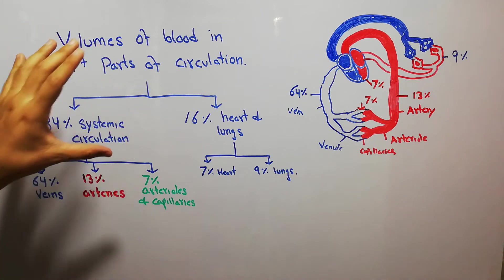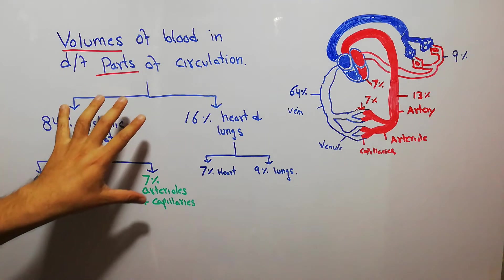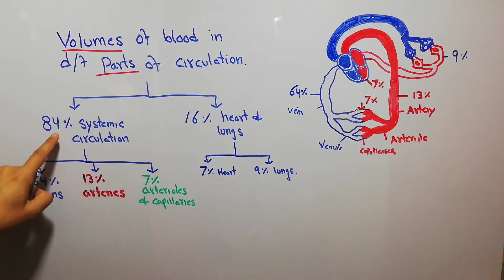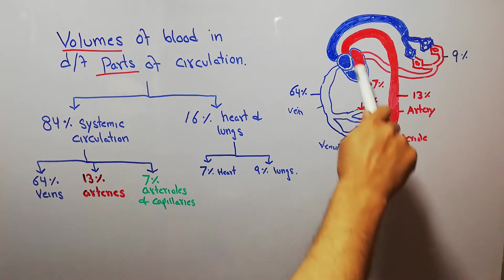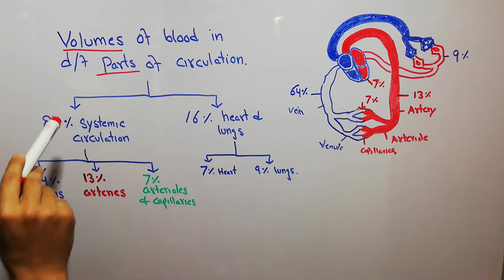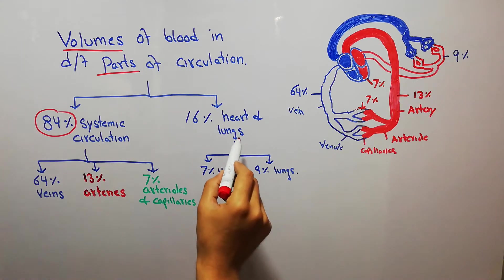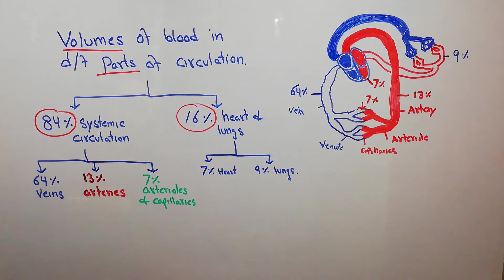Now we are going to discuss a simple topic about the volume of blood in different parts of circulation — how much blood is present in which part. Basically it is divided into two main parts: 84% of the blood is present in the systemic circulation, which is the bigger circulatory circuit supplying blood to the whole human body except the lungs. The pulmonary circuit, which consists of the heart and lungs, has just 16% of the blood.